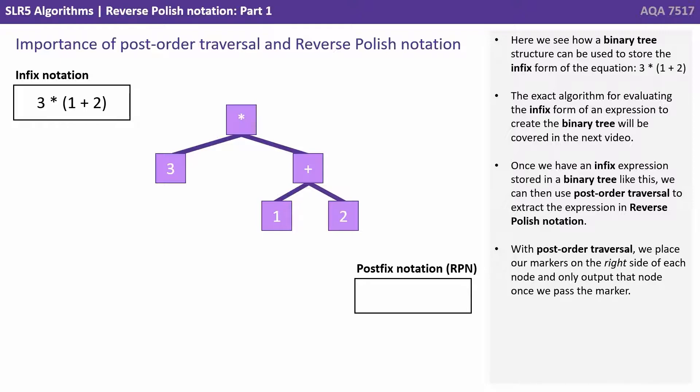Now remember from the previous videos with post-order traversal we place our little markers on the right side of each node and only output the node once we pass the marker.